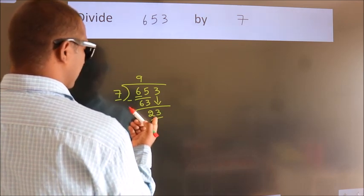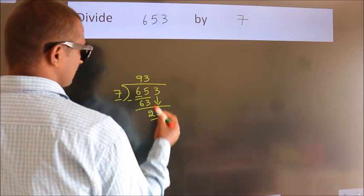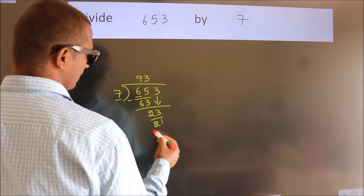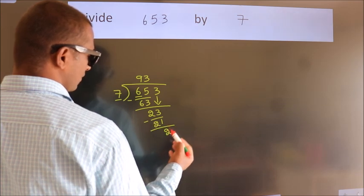A number close to 23 in the 7 table is 7 threes, 21. Now we should subtract. We get 2.